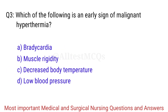Q3. Which of the following is an early sign of malignant hyperthermia? The right answer is Option B: Muscle rigidity.